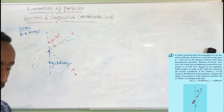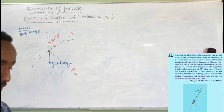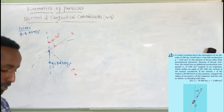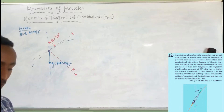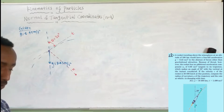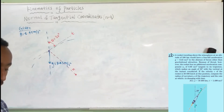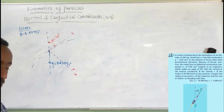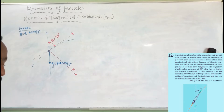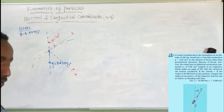In the absence of forces other than gravitational acceleration, due to thrust, the rocket has an additional acceleration component A1 of 8.8 m per second squared, tangent to its trajectory, as seen from the diagram.